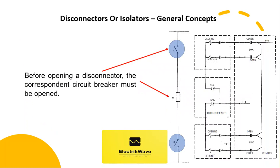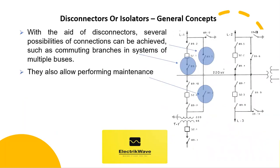Before opening a Disconnector, the corresponding Circuit Breaker must be opened. With the aid of Disconnectors, several possibilities of connections can be achieved, such as commuting branches in systems of multiple buses as shown in the figure. They also allow performing maintenance in case of breaker failure.